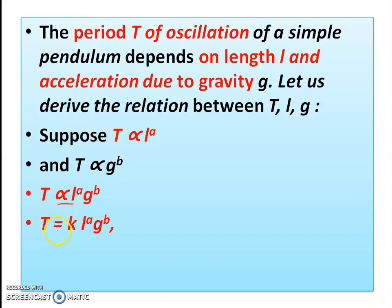Removing the proportionality sign, we write T equal to k times L raised to a times g raised to b, where k is a constant. This constant k has no unit and no dimensions.